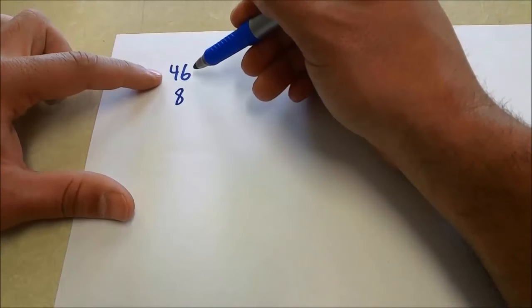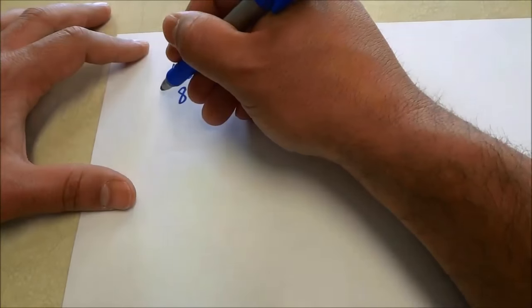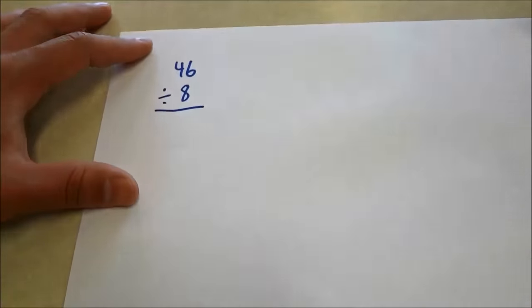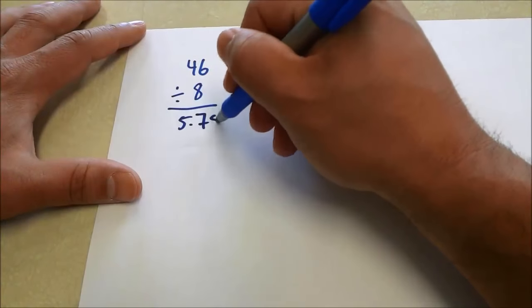You're going to divide the total number of feet by the distance between each post. So 46 divided by 8. 46 divided by 8 is going to be 5.75.